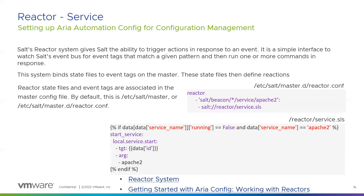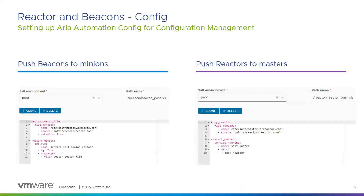In the example, if the apache2 running status is false, use 'service.start' to start it on the minion ID noted in the data payload. The beacon event includes a data payload where one of the properties is the minion ID, which becomes the target when running the state file to start the service. Instead of manually copying reactor and beacon configuration files, I like to create a state file and a job to push them as I make changes.